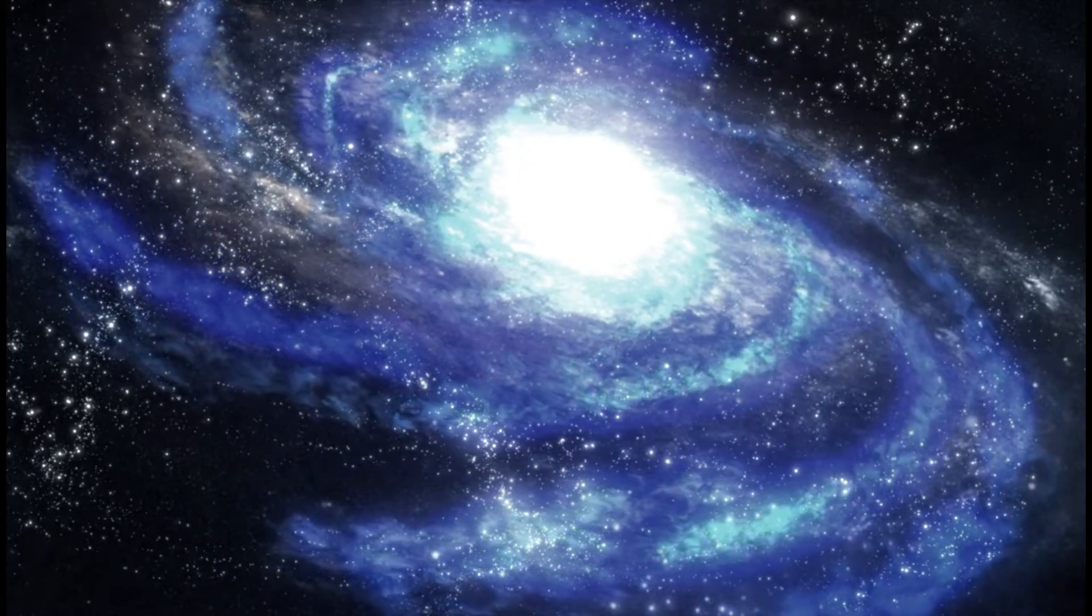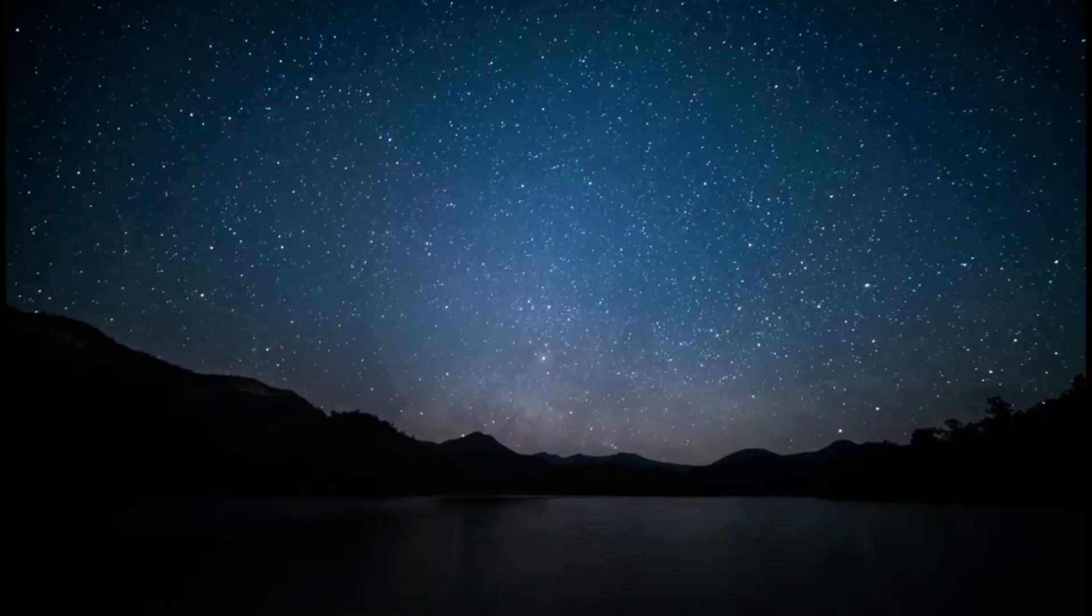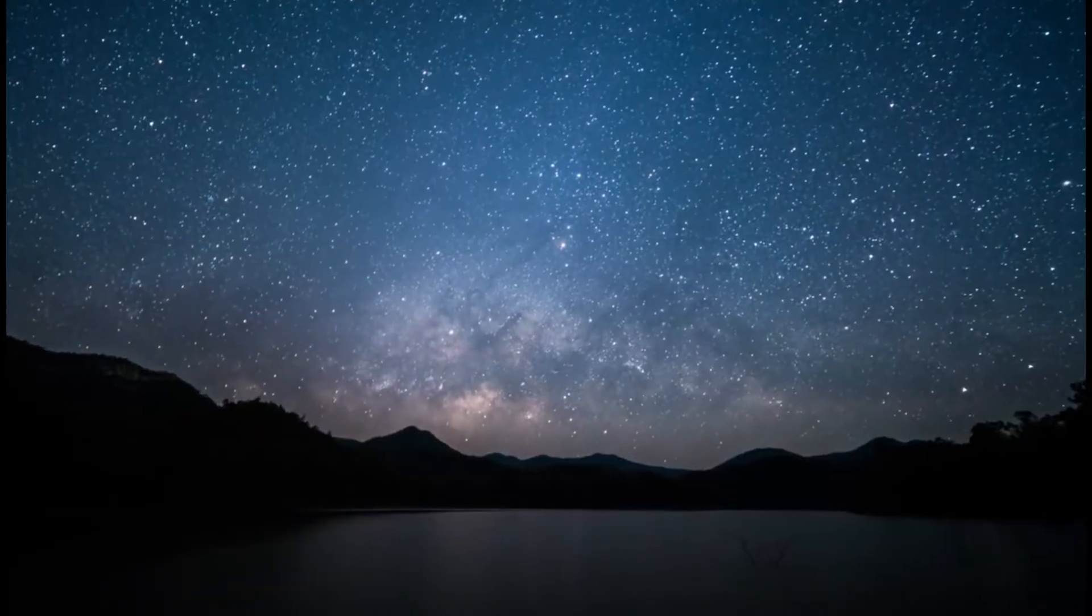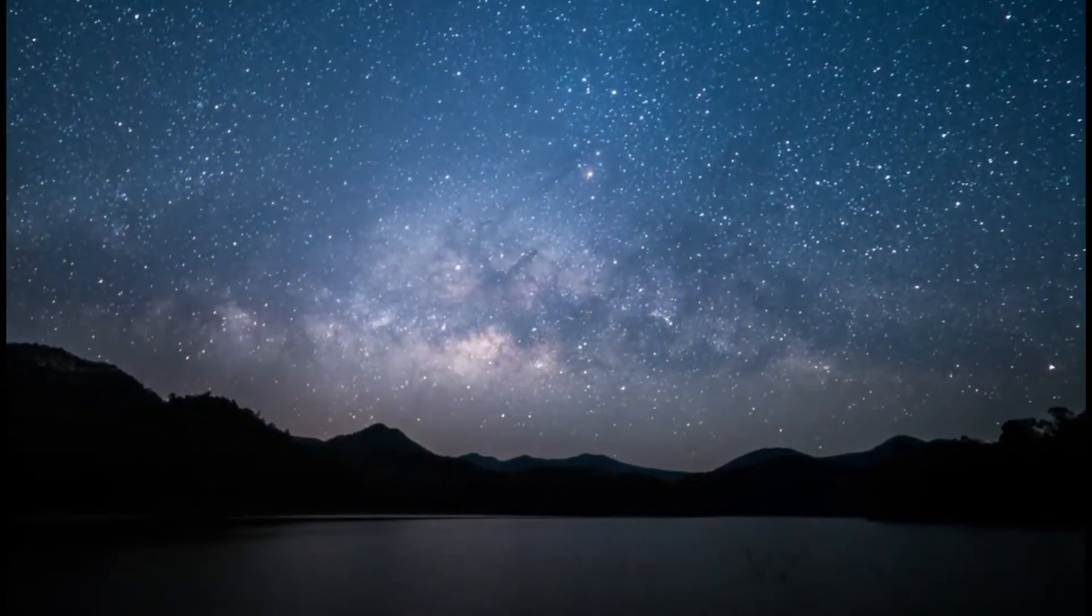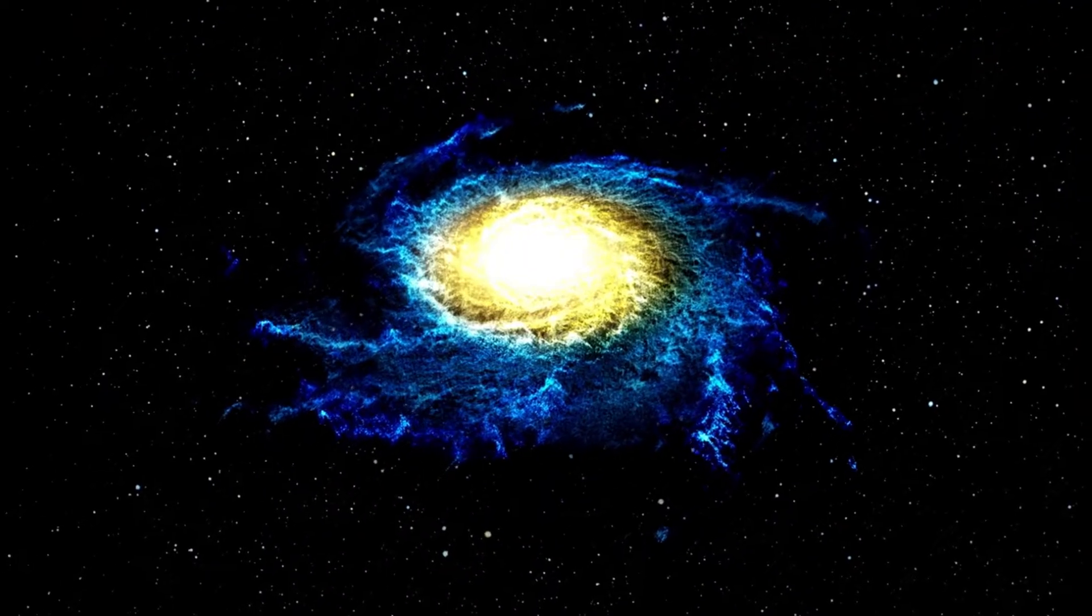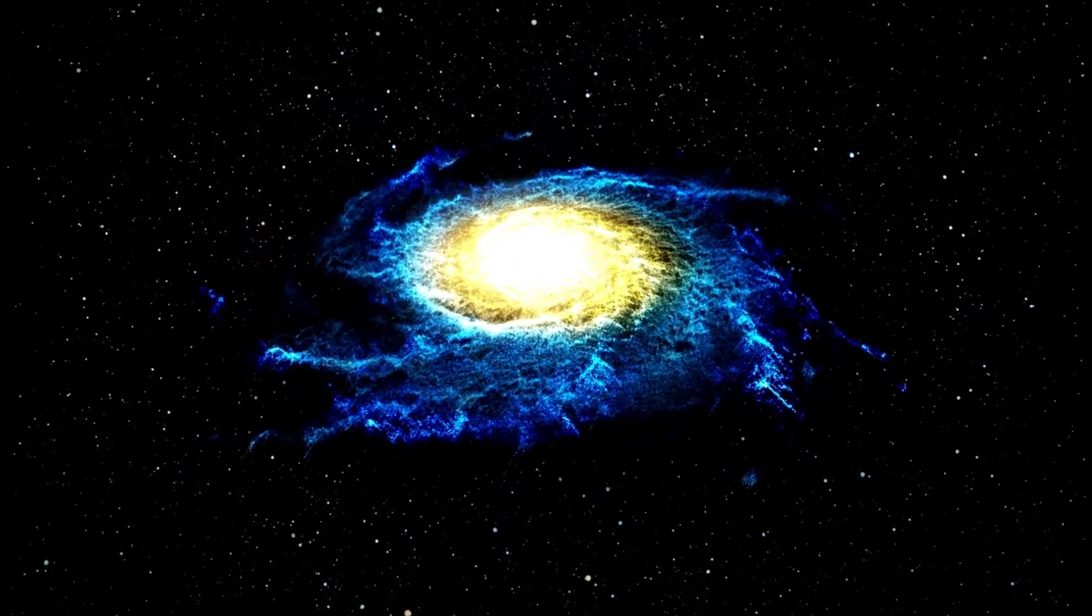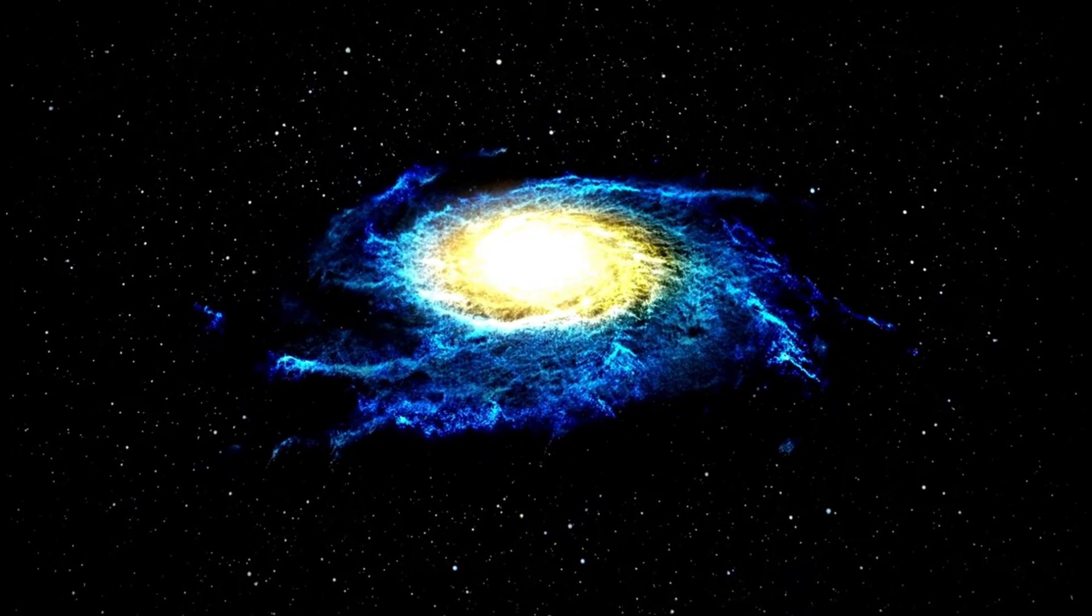Another captivating image is that of the Southern Ring Nebula, a planetary nebula located 2,000 light-years away from Earth. This image, captured by the JWST, shows the complex structure of the nebula in stunning detail, revealing the glowing gases expelled by a dying star.